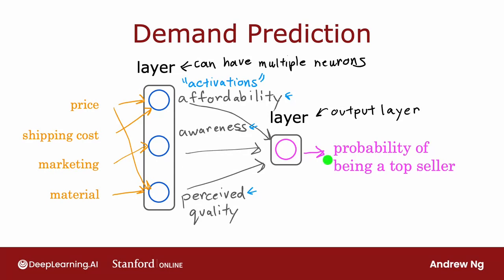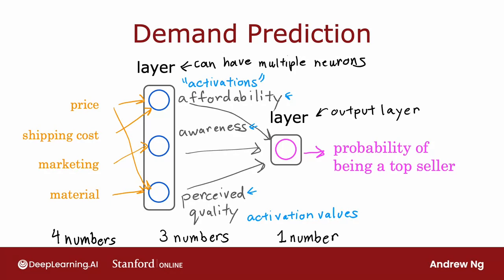This output probability is also the activation of the neuron on the right. This particular neural network carries out computations as follows: it inputs four numbers, then this layer uses those four numbers to compute three new numbers, also called activation values. And then the final output layer uses those three numbers to compute one number. In a neural network, this list of four numbers is also called the input layer.